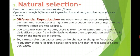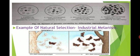Due to sexual reproduction there is free flow of genes, and genetic variability spreads from individuals to the population and finally to most members of the species. Natural selection causes progressive changes in gene frequency: the frequency of more adaptive genes increases and that of less adapted genes decreases.